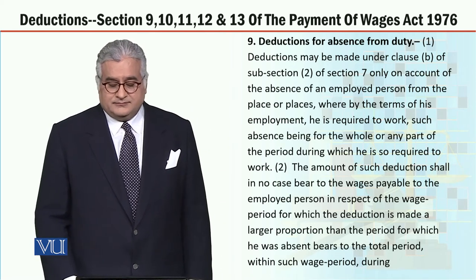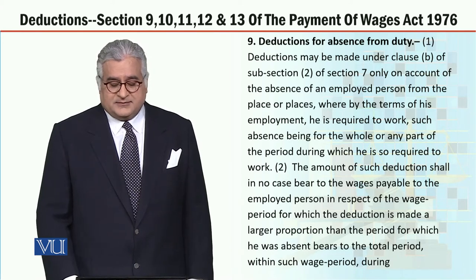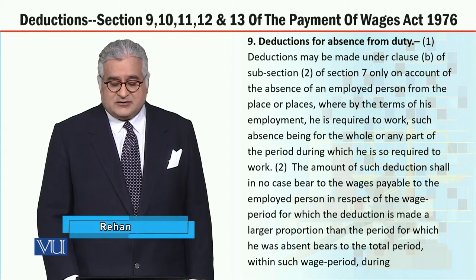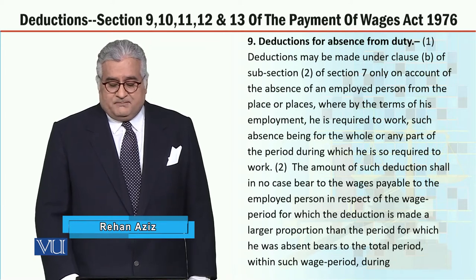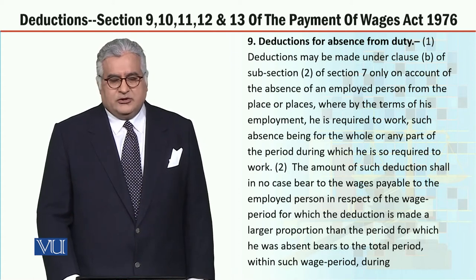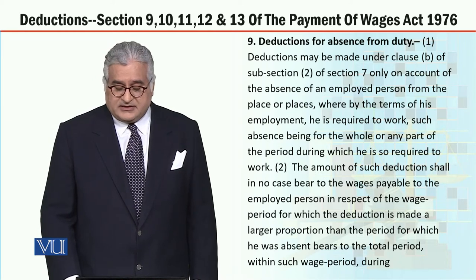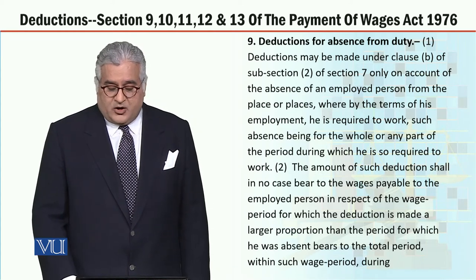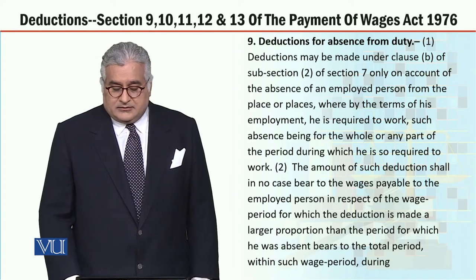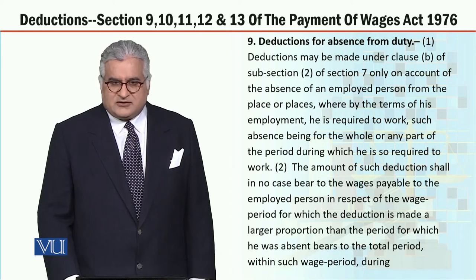Section 9: Deductions may be made under clause B of subsection 2 of section 7 only on account of the absence of an employed person from the place or places. My dear students, if there is a person who has a duty in a particular place and is absent, then there are deductions. And the deductions will be reasonable according to the facts of the case.